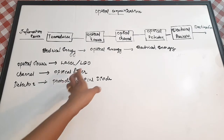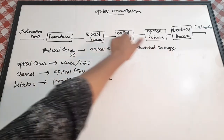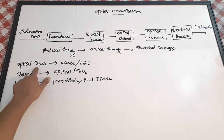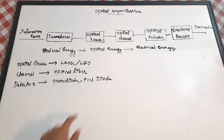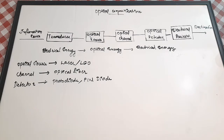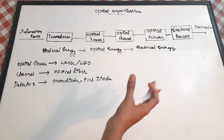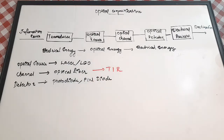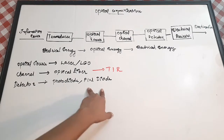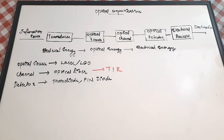Since we are dealing with optical communication, we focus on three areas: optical source, optical channel, and optical detector. The optical source generates light proportional to electrical energy — generally LED or laser. The optical channel is the medium for transmitting light, which is the optical fiber, operating on the principle of total internal reflection (TIR). The detector, which generates electrical energy proportional to light received, is generally a photodiode or PIN diode.